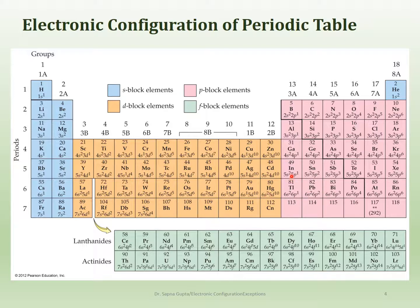The only thing that changes as you go down any column is the shell number. For boron, the shell number is 2; for aluminum it's 3, then 4, 5, and so on. The shell numbers are given on the left-hand side of the periodic table: row 1 is shell 1, row 2 is shell 2, row 3 is shell 3, and so on. Later we'll pick a random element and fill it out using the periodic table.